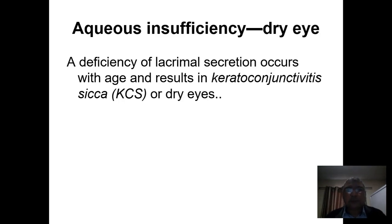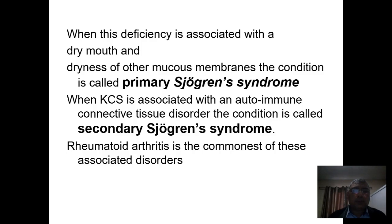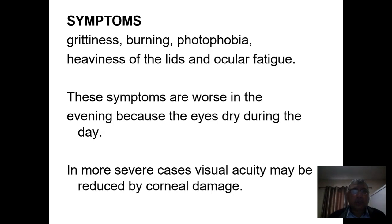First, we will discuss aqueous component insufficiency, which is called dry eye. A deficiency of lacrimal secretion occurs with age and results in keratoconjunctivitis sicca, or dry eye. This deficiency may also be associated with dry mouth and dry mucous membranes, a condition called primary Sjögren's syndrome. When keratoconjunctivitis sicca or Sjögren's syndrome is associated with an autoimmune connective tissue disorder, the condition is called secondary Sjögren's syndrome. Rheumatoid arthritis is the commonest associated disorder.